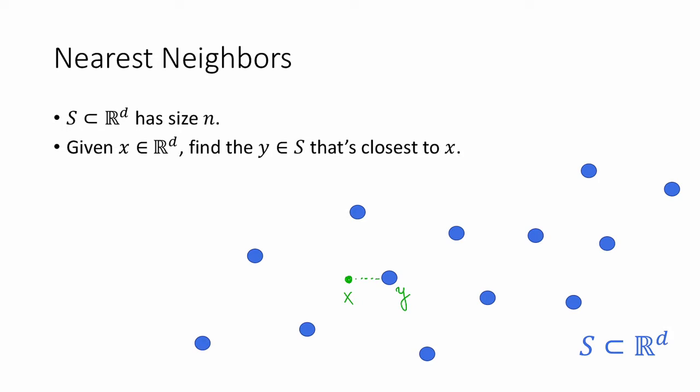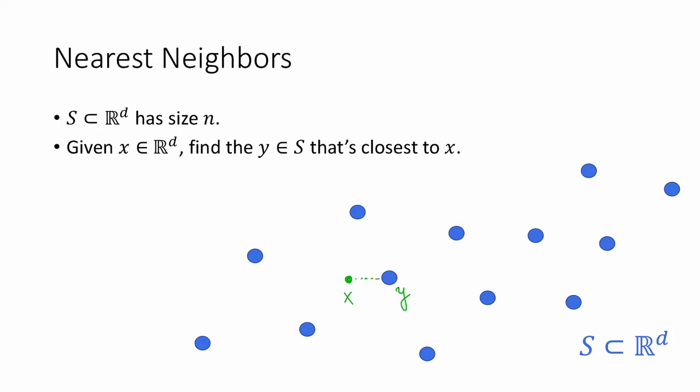The nearest neighbors problem is a pretty fundamental problem that shows up in a lot of different applications. Our first try to solve this problem might be the following algorithm. Given a query point X, we just loop through all of the different Ys in our set S, we compute the L2 distance between X and Y, and we just return the closest Y that we find.